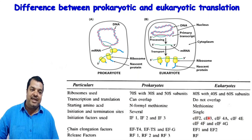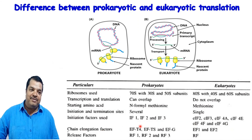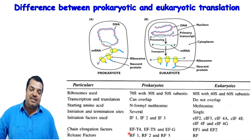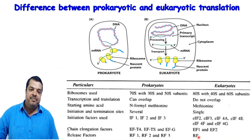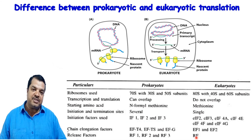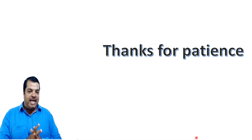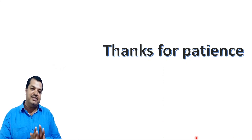Eukaryotic initiation factors: eIF2, eIF3, eIF4A, eIF4E, eIF4F, eIF4G. Chain elongation factors in prokaryotes: EF-Tu, EF-Ts, EFG; in eukaryotes: EF1 and EF2. Release factors in prokaryotes: RF1, RF2, RF3; in eukaryotes: only one type of release factor. These are the major differences between prokaryotic and eukaryotic translation. I hope you found this lecture good — thank you for your patience.